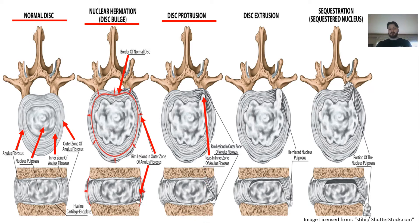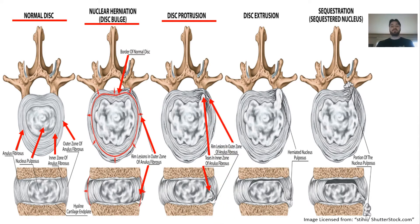Going back to those annular tears — we have tears on the disc in those areas, which can cause significant problems. The red arrows are pointing to various tears or disruptions within the annulus. When we get those tears, that can further cause problems and cause nucleus material to leak outwards of the spinal disc, which I'll go into more detail on in a future video as that's a separate topic.